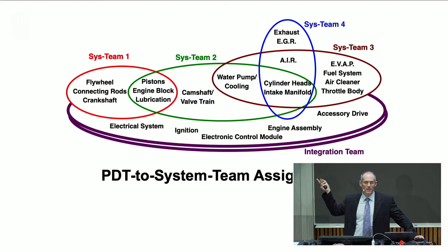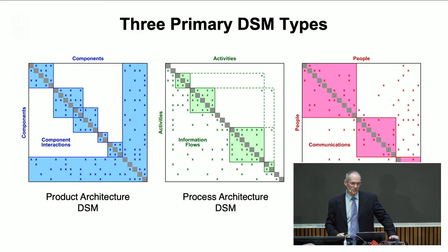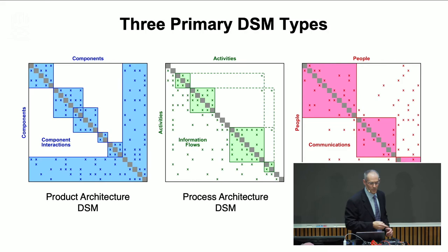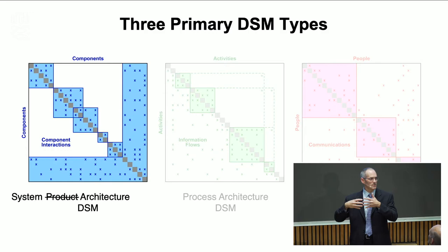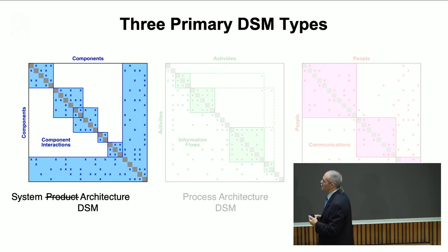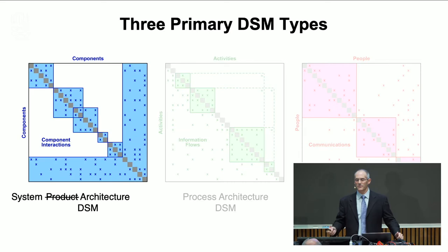I've shown you two examples — process and organization. The third dimension is the system or product architecture. I'm going to call this system architecture because those of us who work in engineering systems think of it as the architecture of the system and the way it breaks down. Let me show you an example of how this looks for a system — we're going to break up the system into subsystems, components, and modules, and ask how do they interface together and what's the architecture of that set of connections.